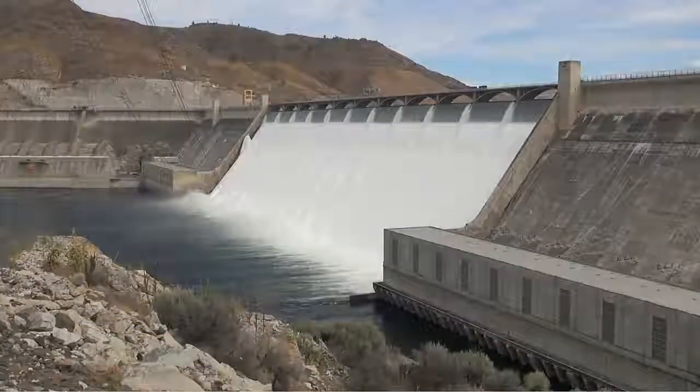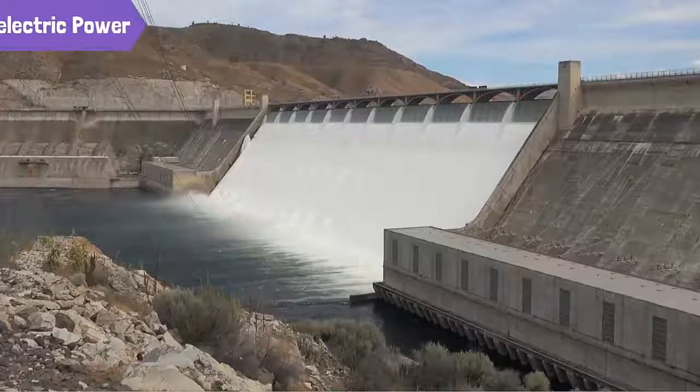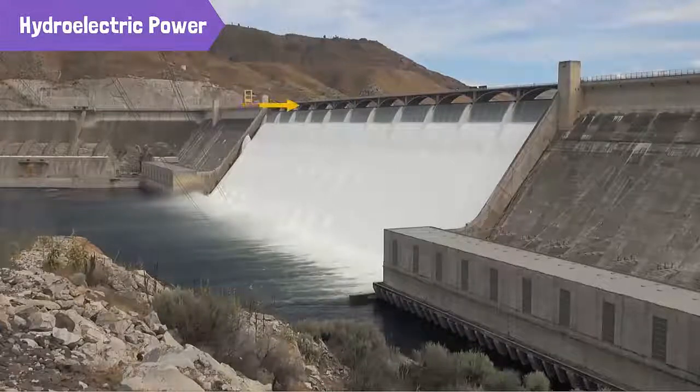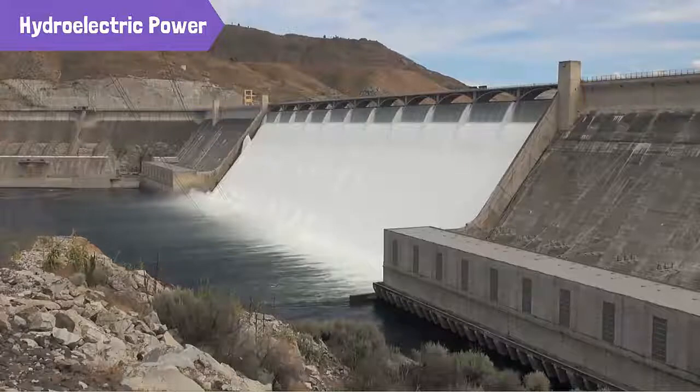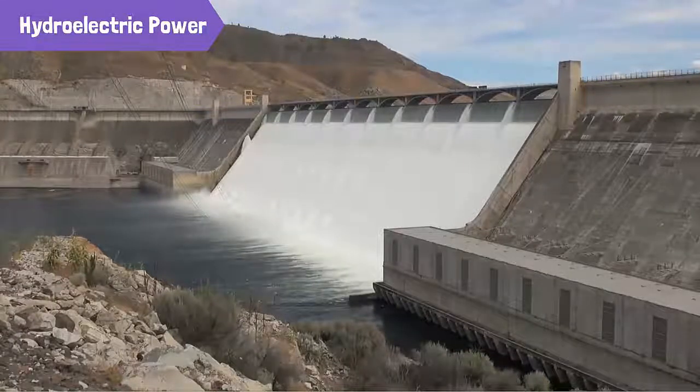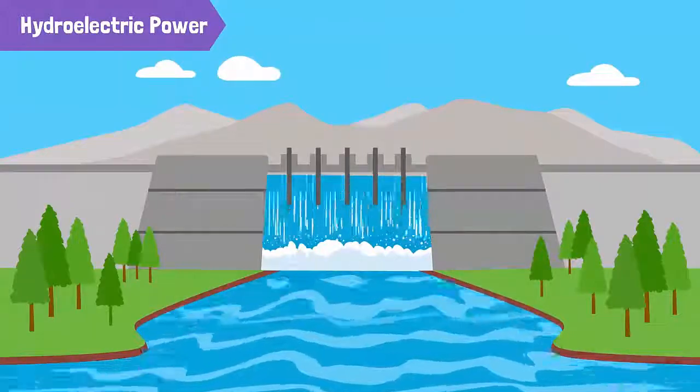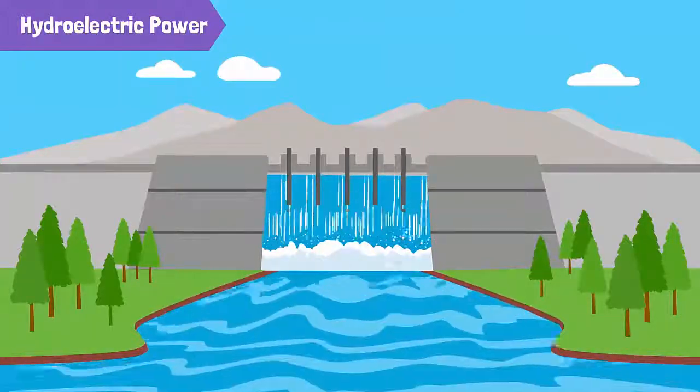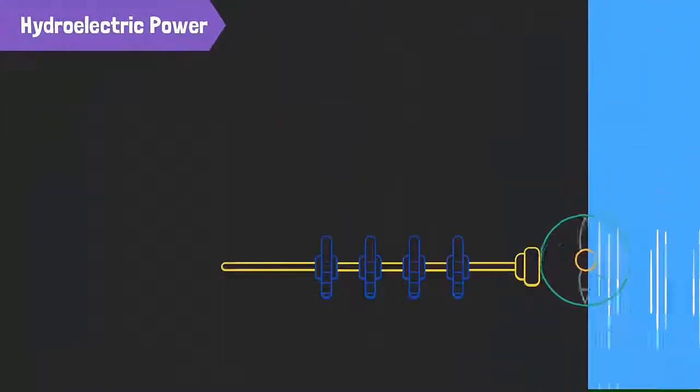The electricity generated by moving water is called hydroelectric power. A dam is built over a river or at a higher level to create an artificial lake or water reservoir. When the dam is opened, the water flows downhill towards the water turbines. This turns the turbines, which drive the generator, to produce electricity.